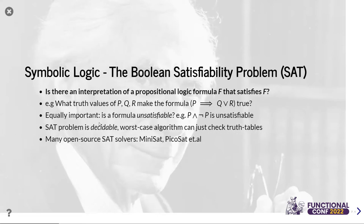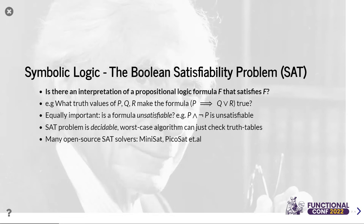This is the core problem that solvers like Z3 address: the Boolean satisfiability problem. Can we assign true or false to the variables in a propositional formula to make it true? An equally important question is unsatisfiability — for instance, p-and-not-p can never be true. The general satisfiability problem is decidable; in the worst case you check all truth tables. SAT solvers today use great algorithms to reduce that time, and Z3 also has SAT solving capability.